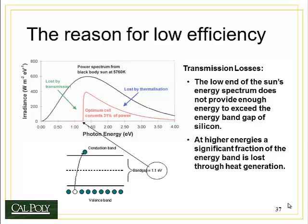As we mentioned before, the reason for low electrical efficiency in solar cells is because a large portion of the spectrum of visible light is not captured by the solar cell itself. Either it's lost by transmission — the low energy photons pass right through the solar cell — or the higher energy photons are transferred into heat and lost as heat loss. So the optimum cell we've been able to produce so far captures only about 31% of the spectrum of light that comes from the sun.